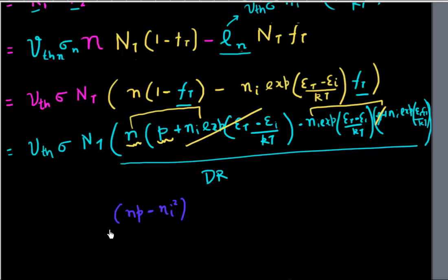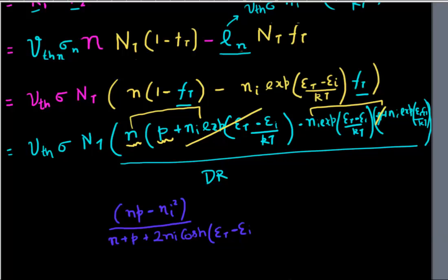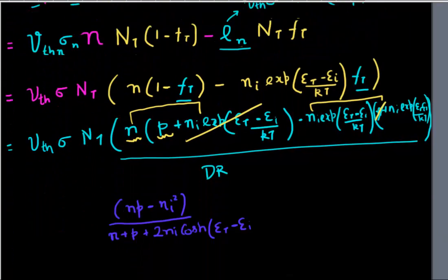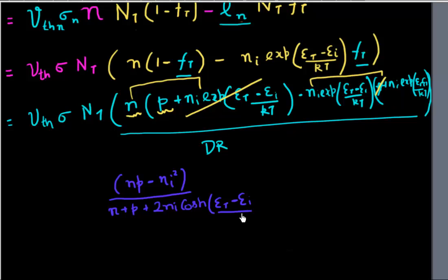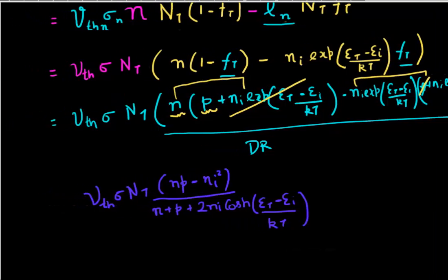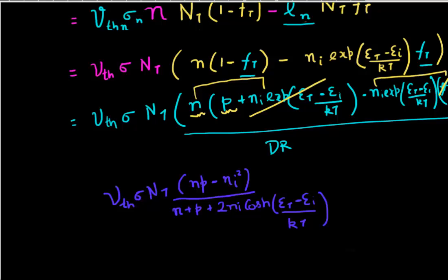This is my numerator, and then I can substitute my denominator, which was N plus P plus 2·Ni times the cosh function of (Et minus Ei)/kT. This is the end — we have derived this net generation and recombination rate.